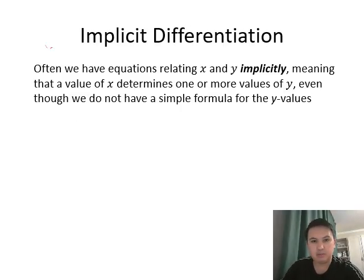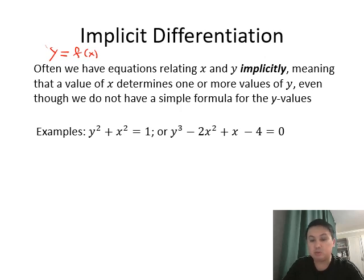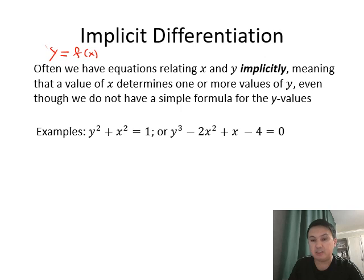So what do we mean by implicit? So far, we were dealing with functions of the form y = f(x). In other words, y was given as an explicit function of x and we knew how to take a derivative. But sometimes x and y are implicitly related, meaning it's not immediately obvious what y is in terms of x. We call this an implicit equation. Examples: y² + x² = 1, or y³ - 2x² + x - 4 = 0. These are implicitly defined — x and y are implicitly related.